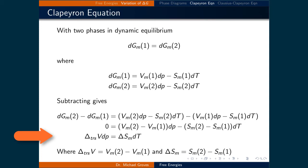We will write the difference in molar volume as the change in molar volume for the transition, delta trans V, and the difference in molar entropy as delta Sm. We can also move one of the terms to the left-hand side, giving change in molar volume for the transition times dp equals the change in molar entropy times dT.